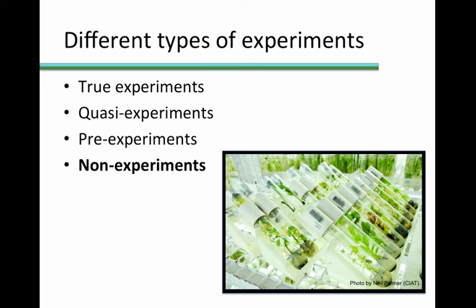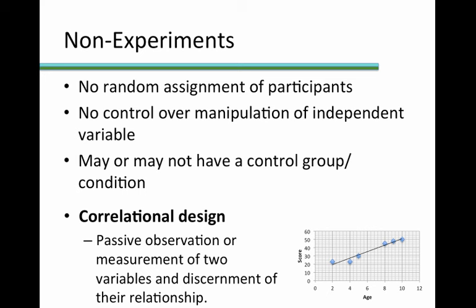And finally, we have non-experiments. By definition, non-experiments lack all three of the characteristics of true experiments: random assignment of participants, control over the manipulation of the independent variable, and the presence of a control group or condition. In some cases, a non-experiment may have a control group, but the other two characteristics will be absent. One common type of non-experimental design is correlational design. In this case, the relationship or correlation between two variables is determined with descriptive statistics. For example, we can look to see if the values of one variable increase as the values of another variable increase, such as in the chart to the right of age and test score. Or perhaps the values of one variable decrease as those of the other variable increase, as we might find if we were comparing age with use of technology.